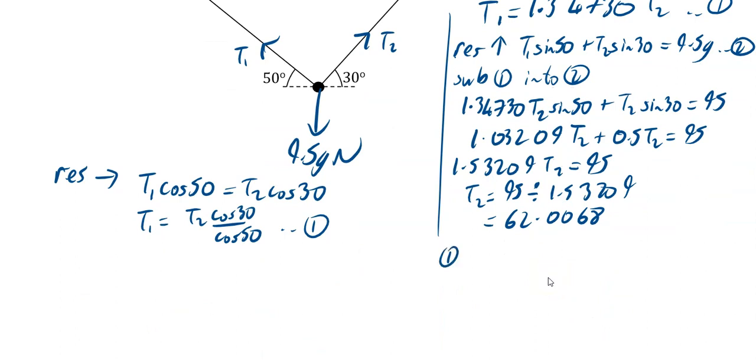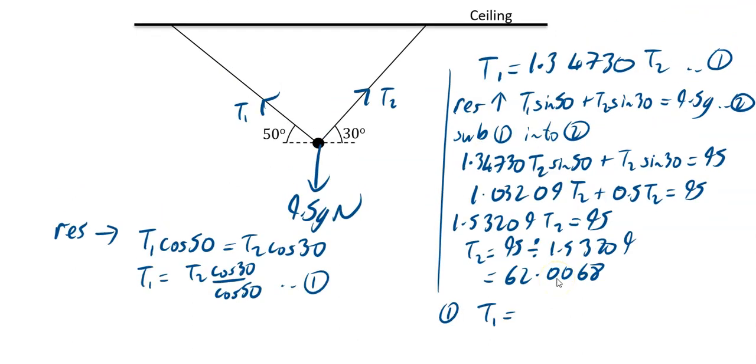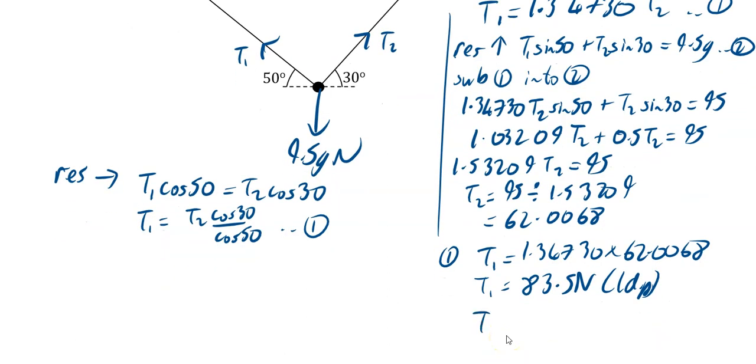Sub that back in then. So sub that into equation one, and your t1 is going to equal 1.34730 times 62.0068. So your t1 works out to be 83.5. We'll just go for 83.5 newtons to 1 dp. And then your last line, just tidy up your t2 as well. So your t2 to 1 decimal place is going to be 62.0 newtons to 1 dp. Clearly 62.0 and 62 are the same thing, but you need the 62.0 if you're giving it to one decimal place. And to be consistent with the latter one, that would be a good thing to do. So there you have it. There's your final answers for that question.